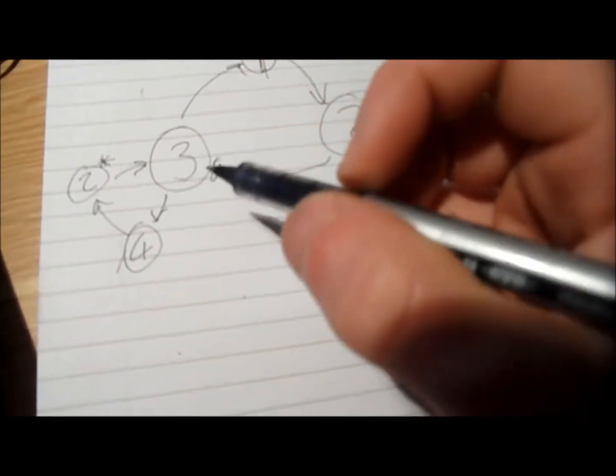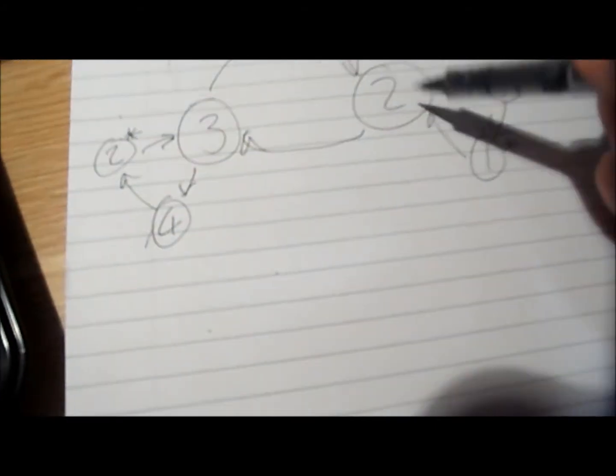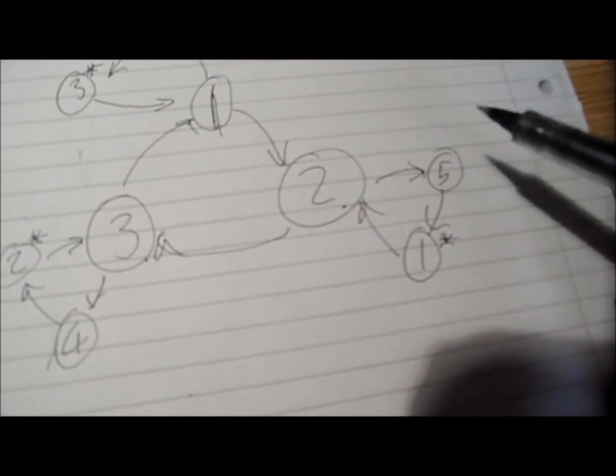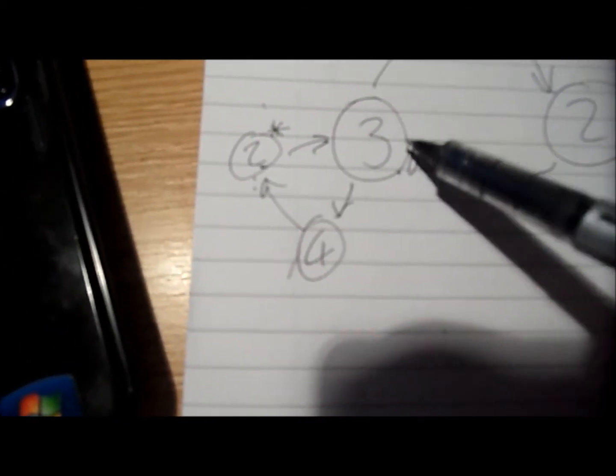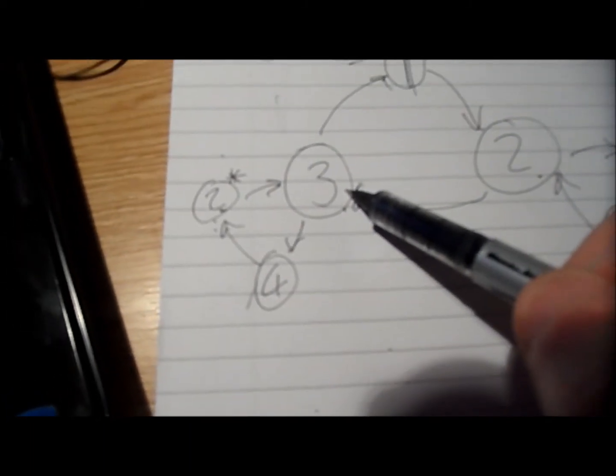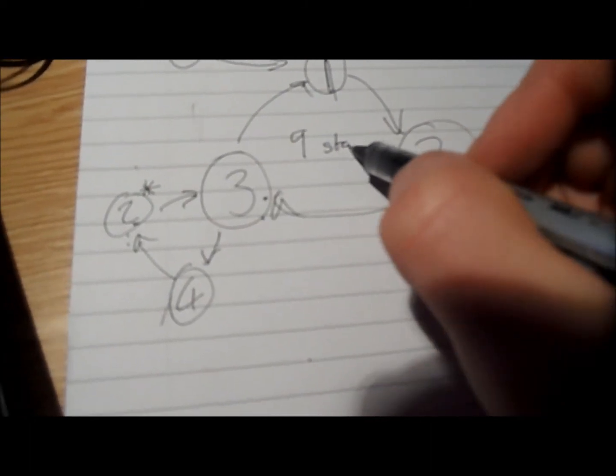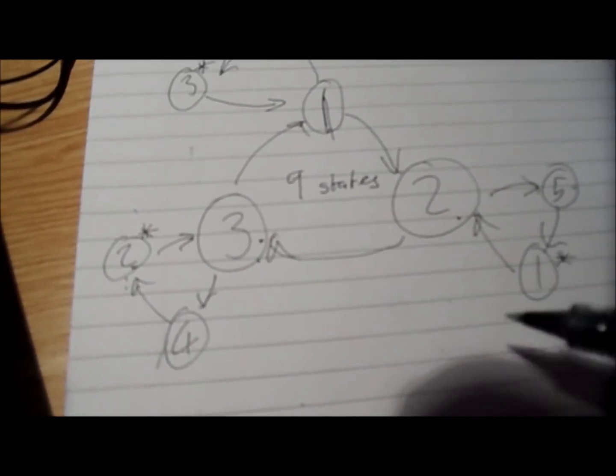And the reason this is a different state, like say this starred one is a different state, is because this two here can go to either three or five. But this two, two star, can only go to three, which is why it's classed as a different state. Which means, overall, there are nine states in a hexaflexagon. Thanks for watching guys.